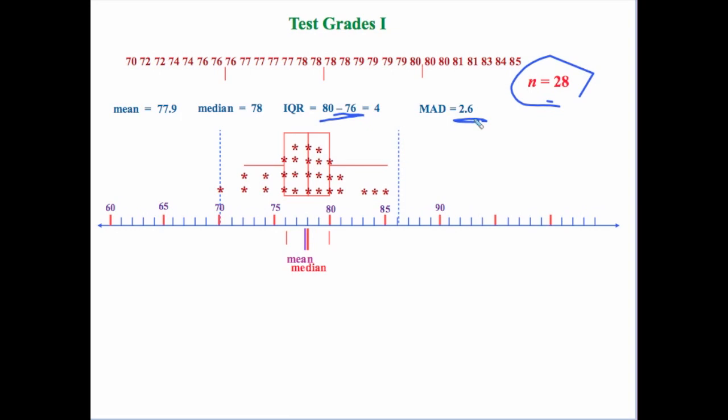So it makes sense that the data looks like what it does. When determining the mild outlier fences, there are none — there just happens to be one data point, the 70, on the borderline, exactly where the fence is. As a teacher I would say the students did fairly well. Nobody really did poorly, but the highest grade was 85, so there wasn't much on the upper end, but they are pretty closely packed together.